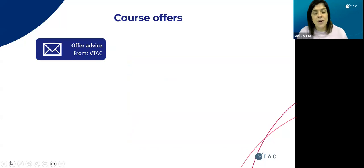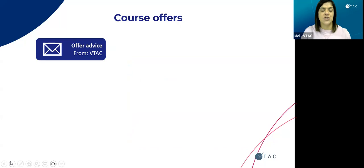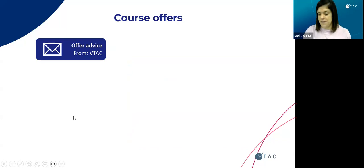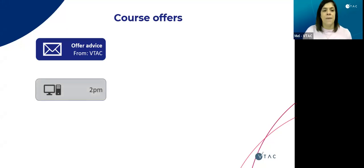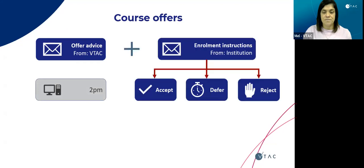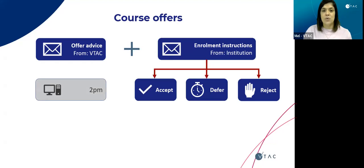There are two different dates for offers depending on whether you're a current Year 12 student or a non-school leaver, but the process is the same. You will receive offer advice from VTAC on the day that offers are released, and those will be available online from 2pm. Alongside that, you'll receive enrolment instructions from the institution that's made you an offer. It's really important to read those through thoroughly because they will all differ depending on the institution.